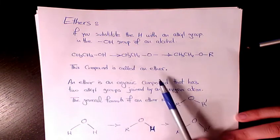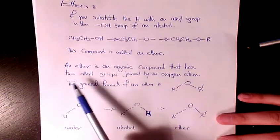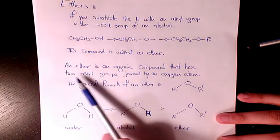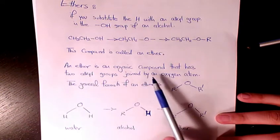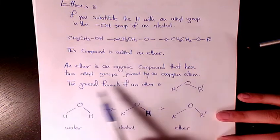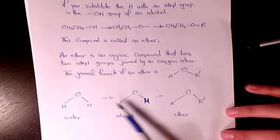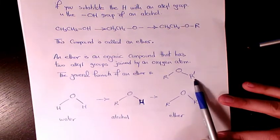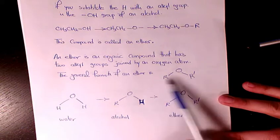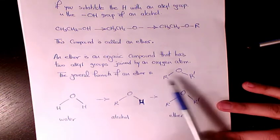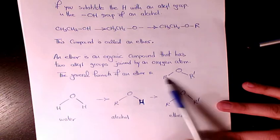So this compound is called an ether. An ether is an organic compound that has two alkyl groups joined by an oxygen atom. The general formula of an ether is R-O-R' (or R prime), so it means that there are two alkyl groups. They can be the same or different structures or different molecules.